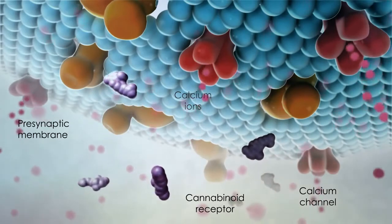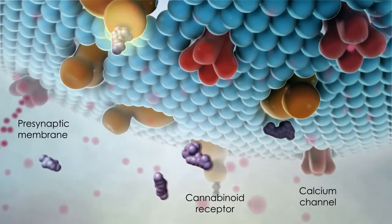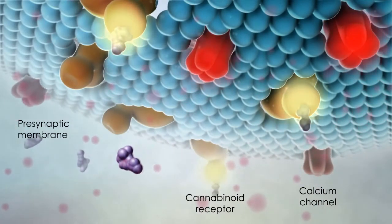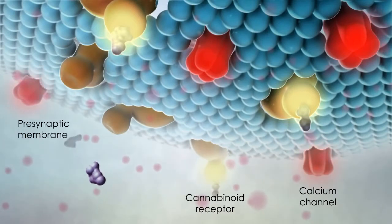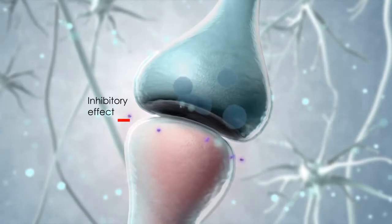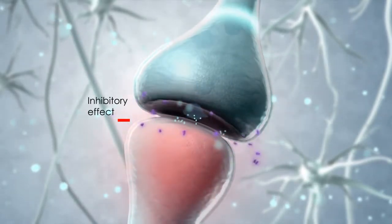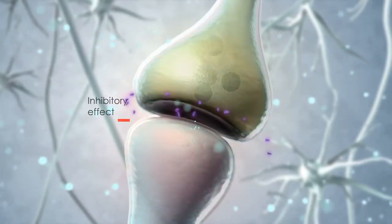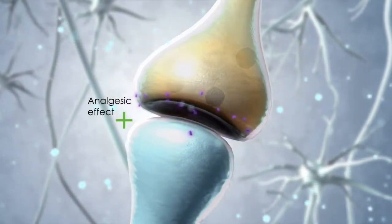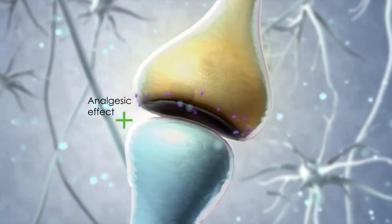Binding of the endogenous cannabinoids affects intracellular signal transduction pathways, reducing the influx of calcium ions into the pre-synaptic neuron, causing a decrease in further neurotransmitter release. This, in turn, influences the frequency of post-synaptic firing.